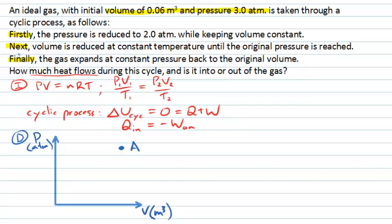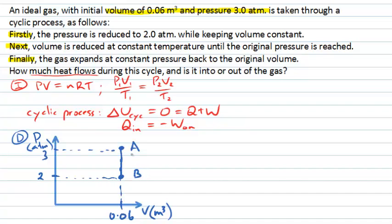State A is our initial state. The first step is the pressure is reduced at constant volume, so we have a vertical line going down. We started at 0.06 cubic metres and an initial pressure of 3 atmospheres, and we come down to a pressure of 2 atmospheres at constant volume — what we call state B. We put an arrow on to indicate the direction of travel from state to state.